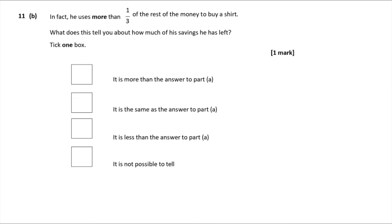Question 11b — in fact he uses more than one-third of the rest on the shirt. What does this tell you about how much savings he has left? If he spends more than one-third of the remaining money, he keeps less than two-thirds. So he saves less than in part a. The answer is: it is less than the answer to part a.